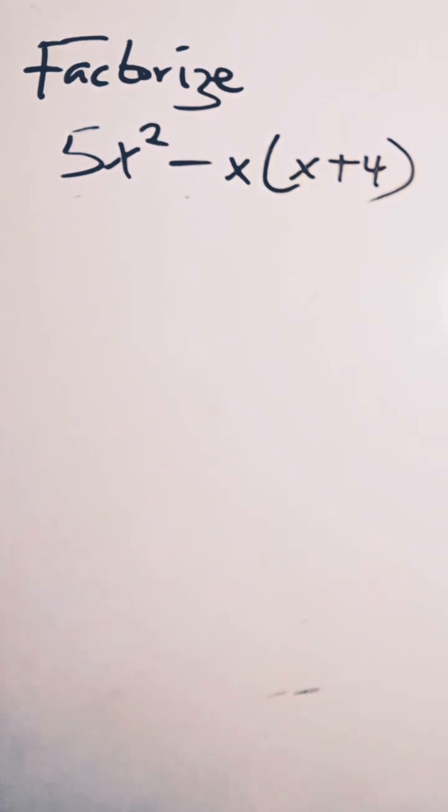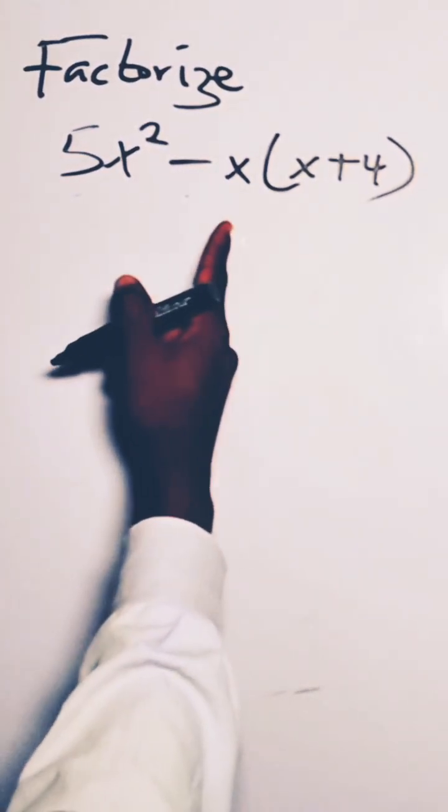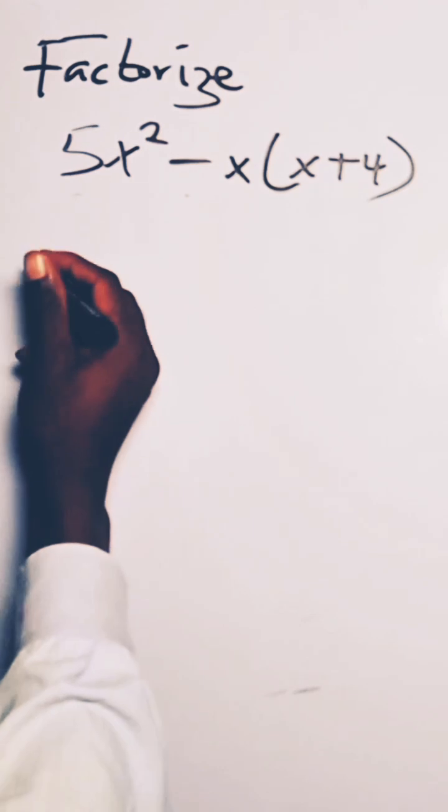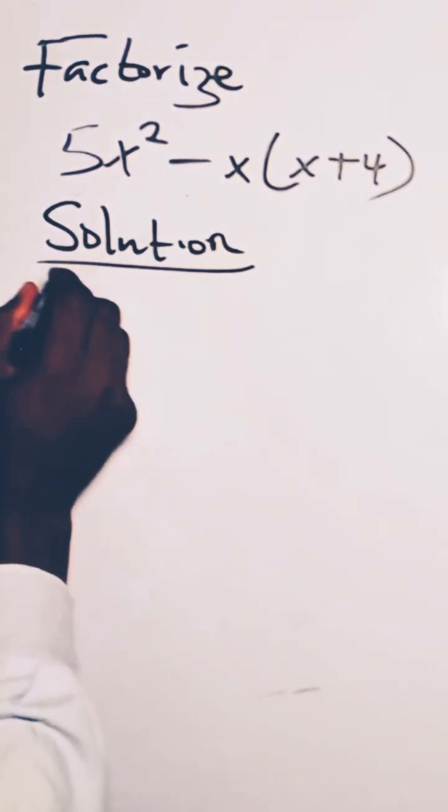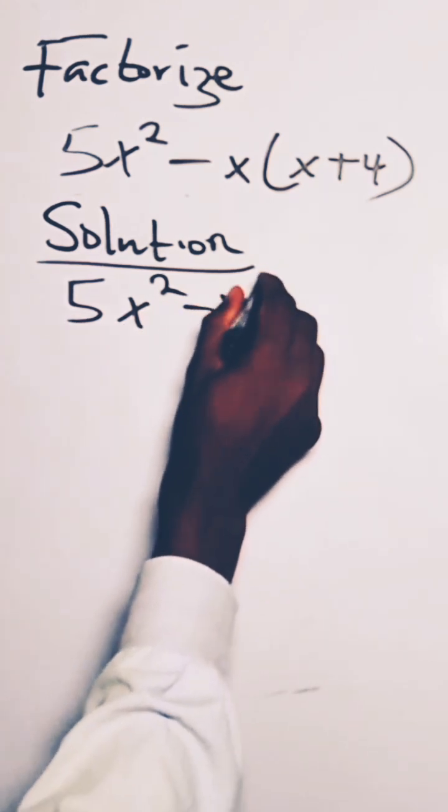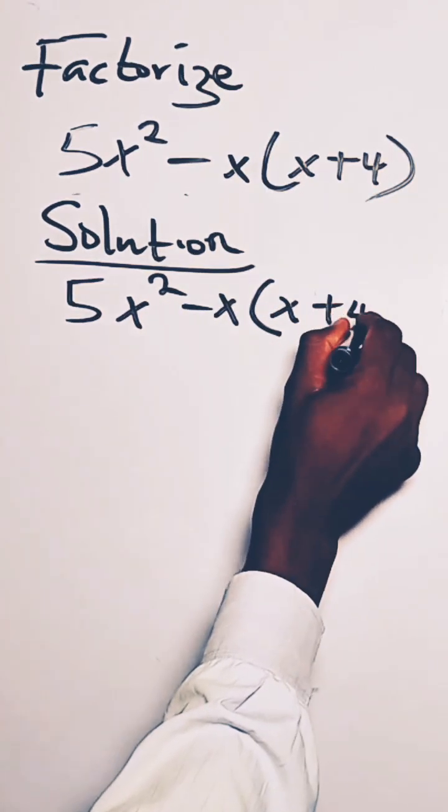The question says factorize 5x squared minus x into x plus 4. How do we do this solution? So we have 5x squared minus x into x plus 4.